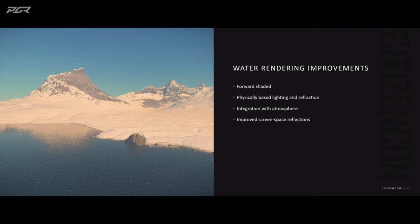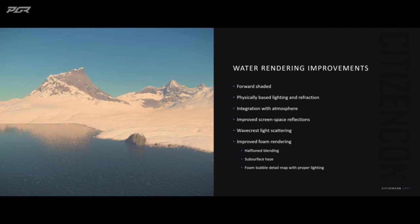Transitioning to forward shading allowed us to introduce more physically-based techniques, such as proper lighting, reflection, and refraction. It allowed us to integrate the atmosphere properly into our water lighting setup, and it also meant that we could get more advanced techniques such as wave crest backlight scattering, better foam rendering which includes halftone blending, surface haze, and much more detailed bubbles on the individual bits of foam.